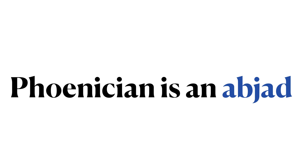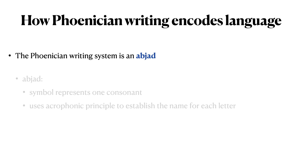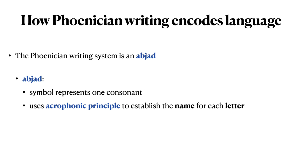To review: the Phoenician writing system is an abjad. In an abjad, each symbol — each letter — represents a consonant, and vowels are not written. The Phoenician abjad uses the acrophonic principle to establish the name for each letter.